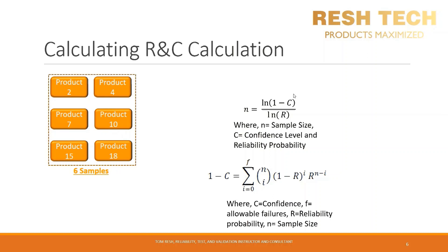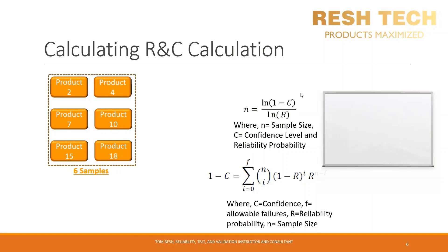The math behind LTPD and reliability and confidence sampling calculations when considering allowable failures is very similar. The key difference is the specific definitions and presentation of the values — where LTPD is the percentage of failures that will be detected and rejected, and reliability is the percentage of the population which will perform at a specific condition during the lifetime of the product in the field. For this example, we are going to take the six samples selected from the population and calculate the reliability based on a 90% confidence level, which is the standard value used for reliability and confidence and LTPD sampling plans.